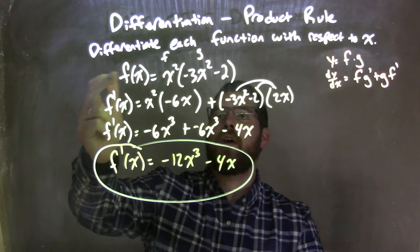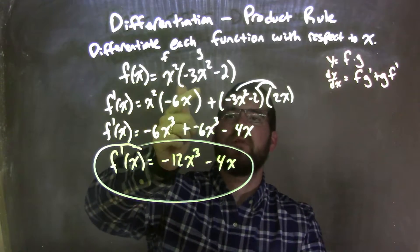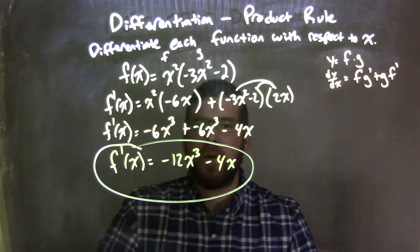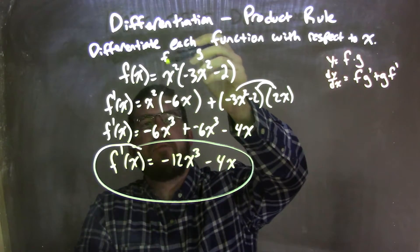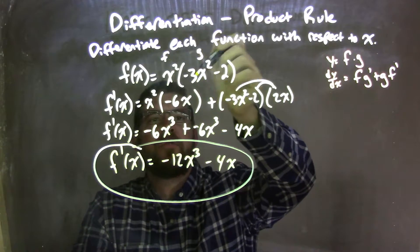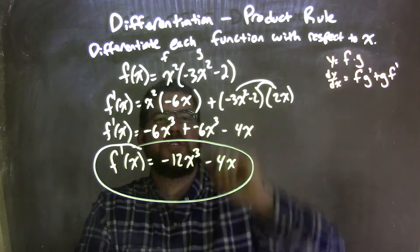So let's recap, we're given f of x is equal to x squared times negative 3x squared minus 2. I noticed that I write this to be x squared to be f, and the other part, negative 3x squared minus 2 to be g.